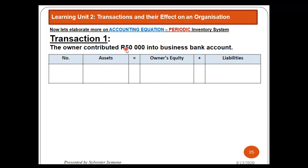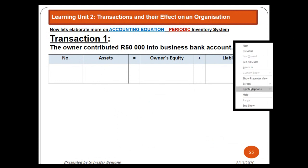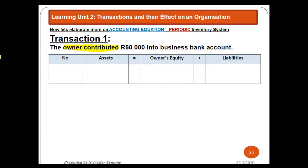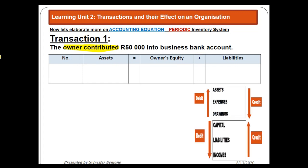The first thing for this transaction is to identify the two accounts involved. We need to check the most important information. The owner contributed something, and remember — anything contributed by the owner is called capital. So the first account is capital. The owner contributed 50,000, which came in the form of cash.